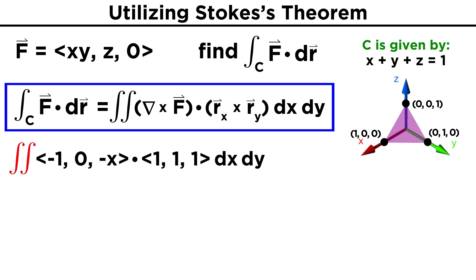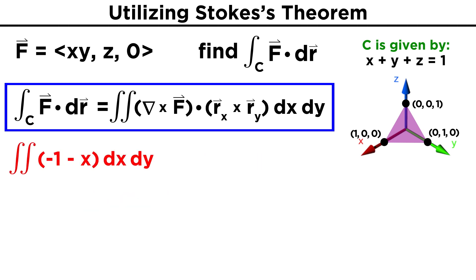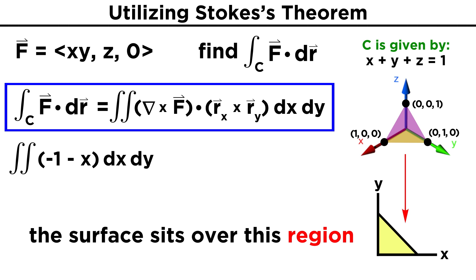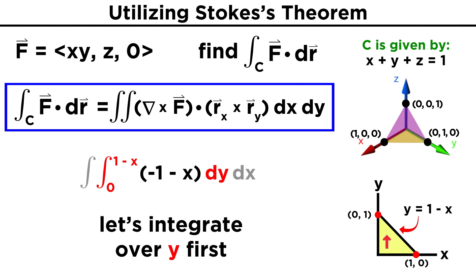Plugging both of these in, we end up with the double integral of (-1, 0, -X) dot (1, 1, 1) dX dY. Calculating the dot product, we get the double integral of negative one minus X, dX dY. Now we just need to determine our bounds of integration. The surface is over a triangular region in the XY plane, the border of which is the line between (1,0) and (0,1). This line is given by Y equals one minus X. We will choose to integrate over Y first, so Y runs from zero to one minus X, while X will simply run from zero to one.